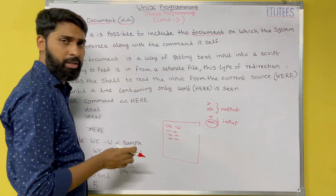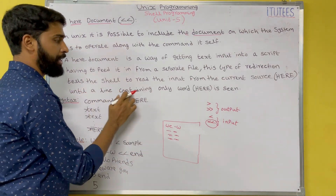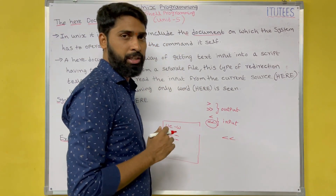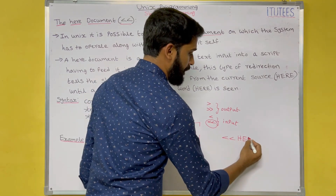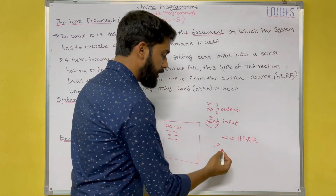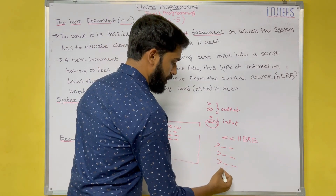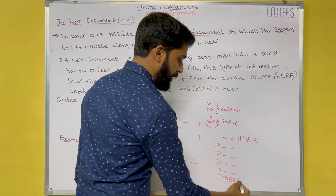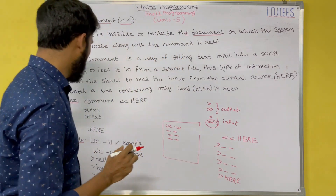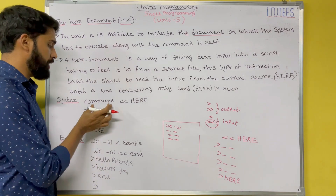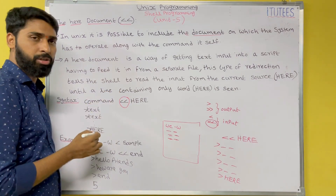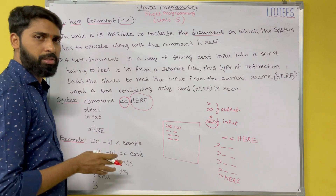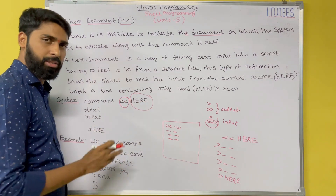The current source is the current shell only, until a line containing only the delimiter word is seen. For example, when using the input redirection operator, after the double less than, you give a word like 'here', and in that place you are going to give the text. How many lines you give is up to you — when you give the delimiter word again, the input will be terminated. The syntax is: write any command, then the double less than operator, and write any word as your delimiter.